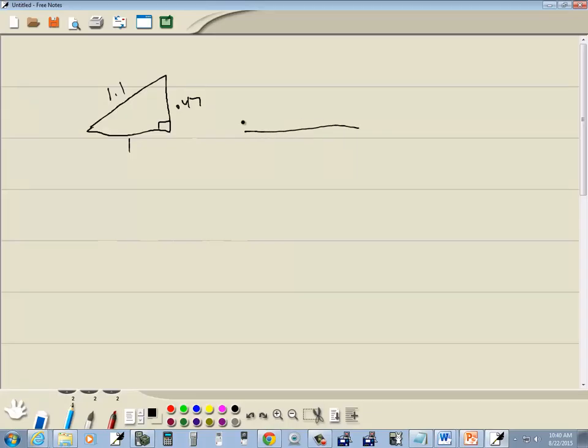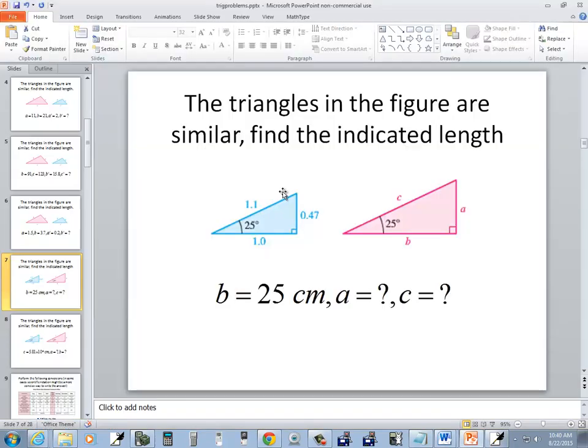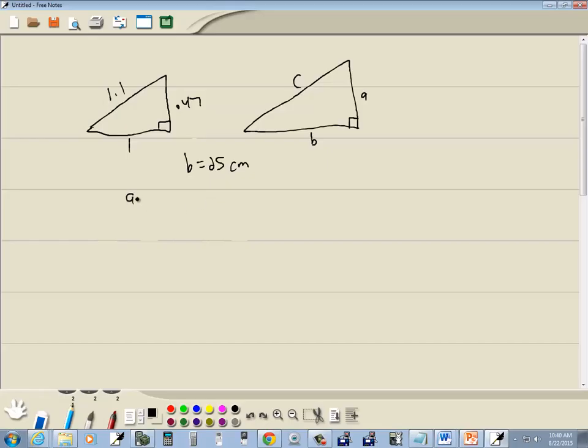And the other one is A, B, C. Okay. And they tell us that B is equal to 25 centimeters. And we're wanting to find A and we're wanting to find C.